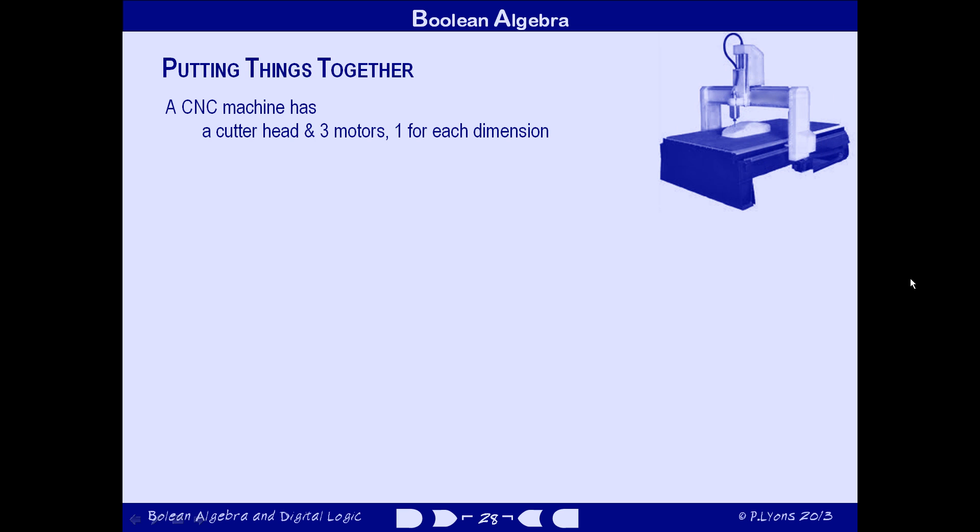Now we're going to develop a little circuit that will control only one of those motors, the up and down Z motor. We'll consider movement in only one direction, downwards. Movement in the opposite direction will be under the control of a similar circuit. So the Z motor will have two pretty much identical control circuits, one for up and one for down, and each of the other motors will be controlled by a similar pair of circuits.